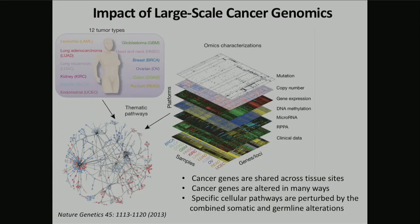I think it would be silly to talk about this without acknowledging the huge amount of discovery that has gone on over the past nearly 10 years in terms of really teasing apart the different omics aspects of cancer. This representative paper from the initial integration of data across 12 different tumor sites from TCGA, as well as ongoing work from much larger integration of data sets between TCGA and ICGC, are pending, and I've seen some results from those.